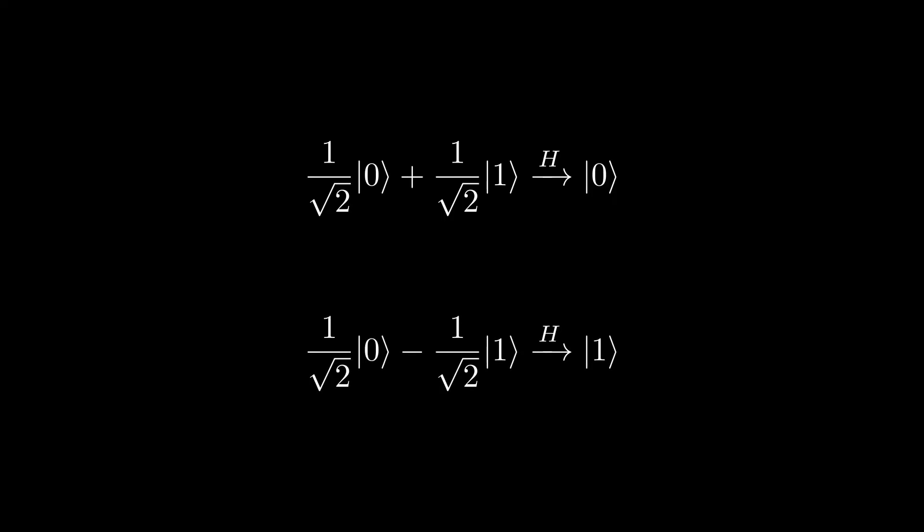These states only differ by a relative phase, but after applying the gate, they are different. Even though initially they both had a 0.5 chance of being measured as zero, and a 0.5 chance of being measured as one.